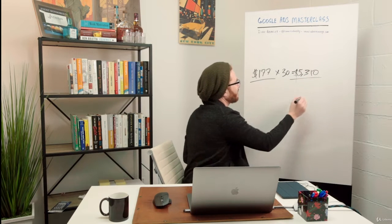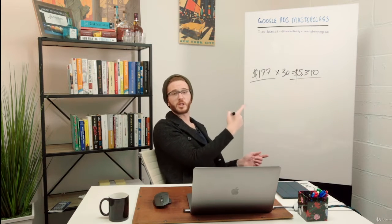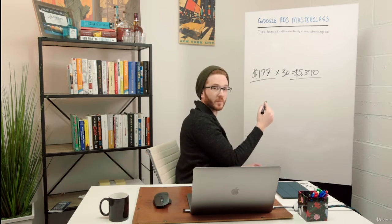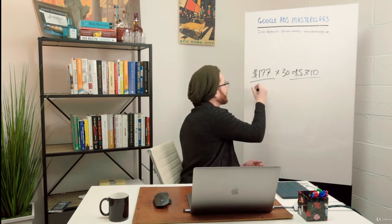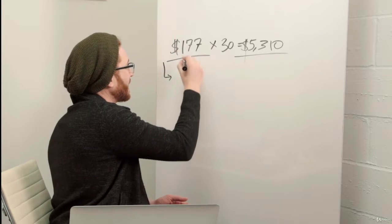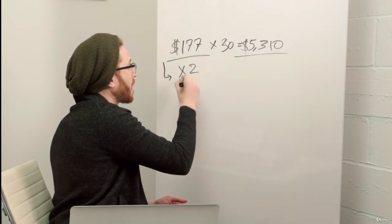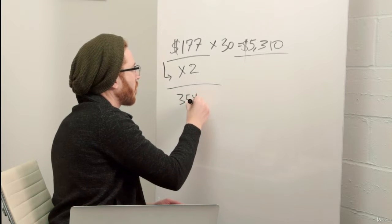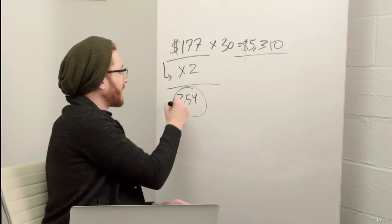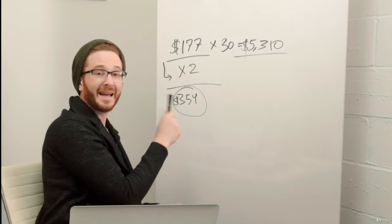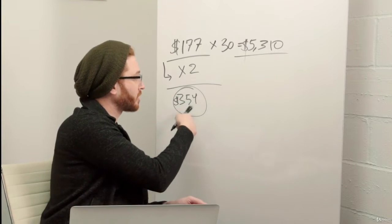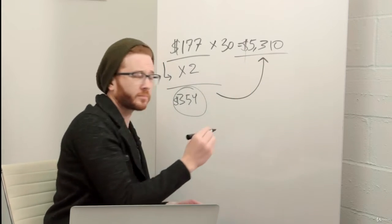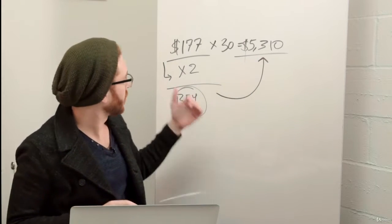So $5,310 is the most you're going to spend over the course of a month, which is actually $177 a day. But I could spend on any given day $177 up to double that, so that comes out to $354. I could spend $354 on any given day, but I won't spend $354 every day because then I'm going to greatly exceed my allotted budget for the course of the month.